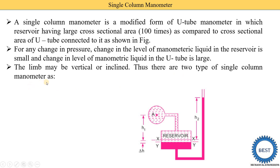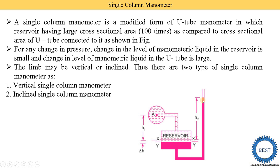There are two types of single column manometer. The first is the vertical single column manometer, where the right limb is vertical. The second is the inclined single column manometer, where the right limb is at a certain angle theta with the horizontal. First we understand the vertical single column manometer, and then we study the inclined single column manometer.